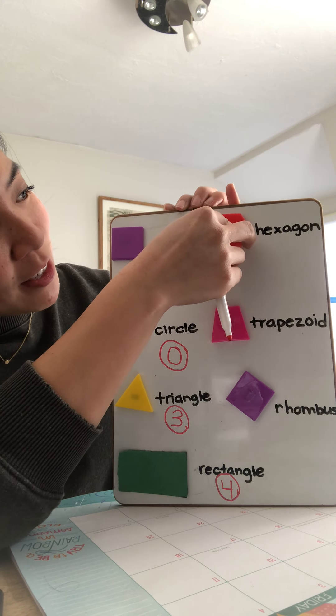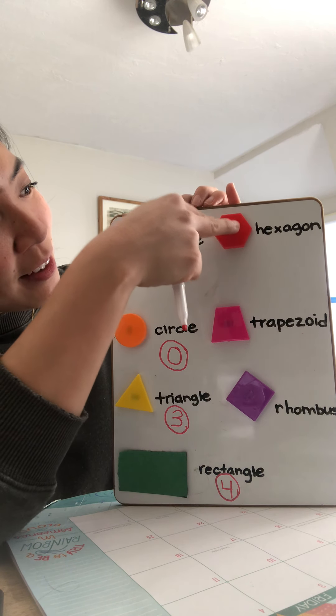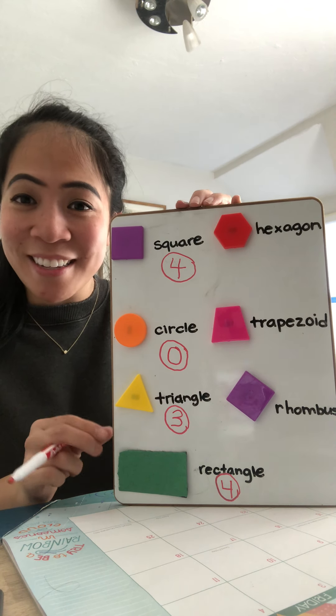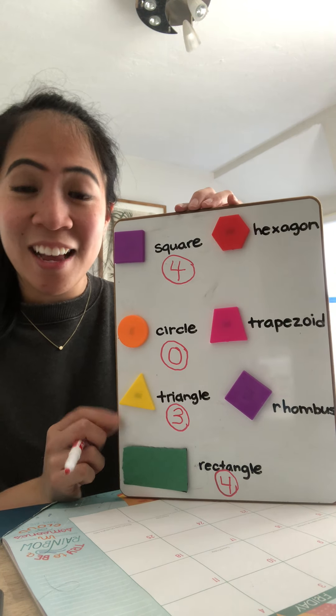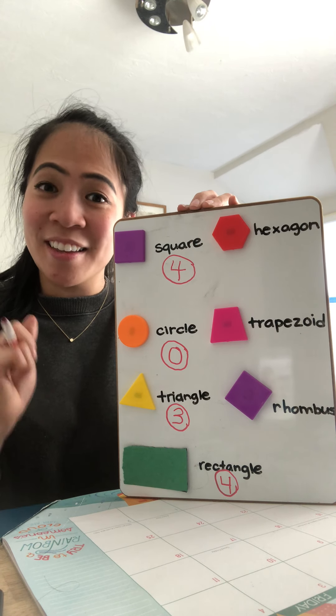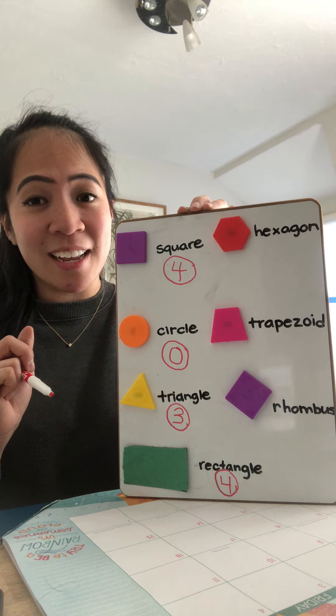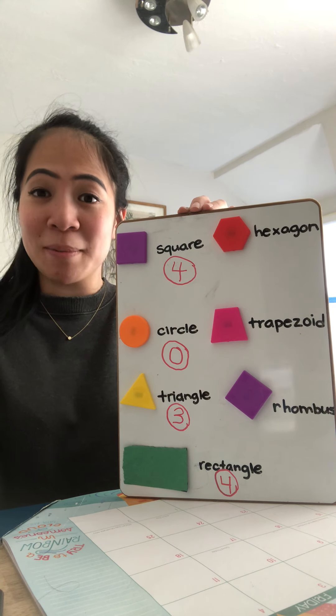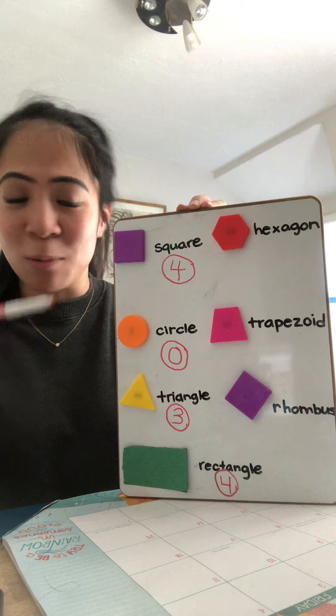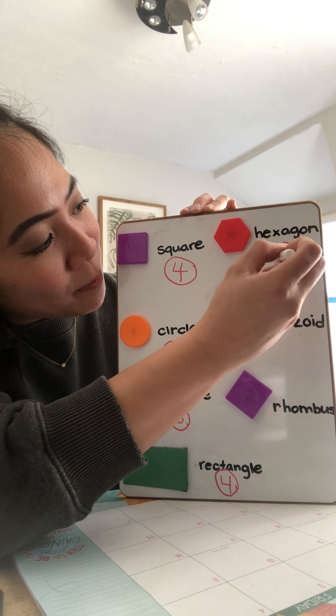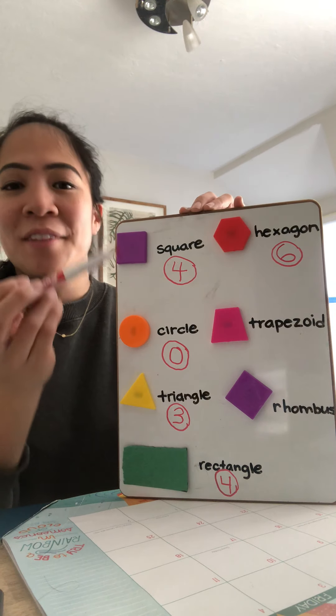Now, have you guys seen a hexagon outside? Do you know what sign outside is a hexagon shaped? A stop sign. That's right. Maybe sometimes when you're driving with mama and daddy, you guys can see the stop sign outside. And it's actually red just like this one. So six sides in a hexagon. Very good.